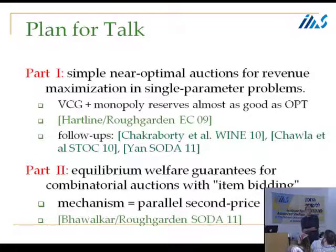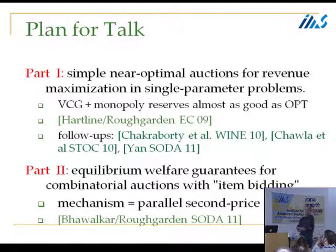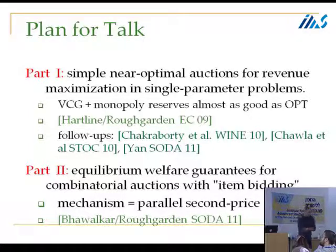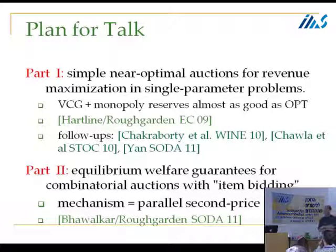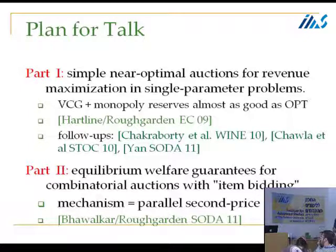This is no longer the state-of-the-art; there have been a number of follow-ups. But I'm going to talk about it anyway because it's a good example. This is about expected revenue maximization in single parameter environments — fairly general ones — and because it's single parameter, Myerson's theory applies and tells us what the optimal auction is. The motivating question is: is there a much simpler auction that does almost as well?